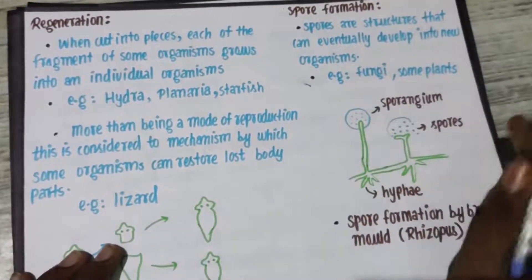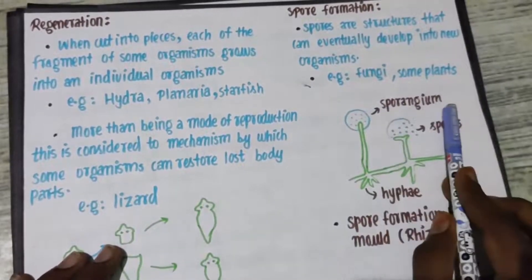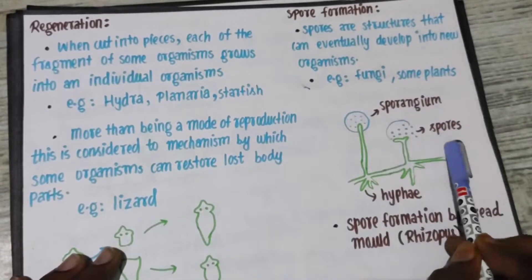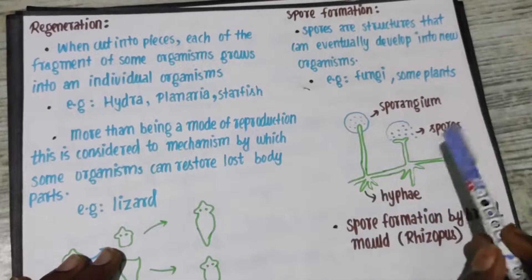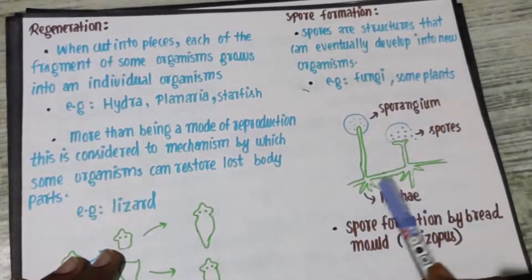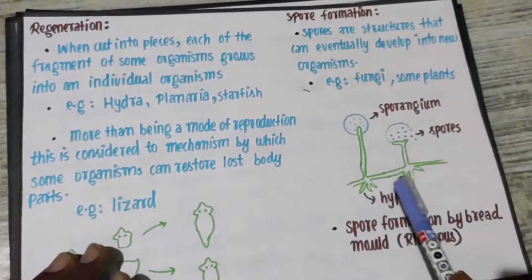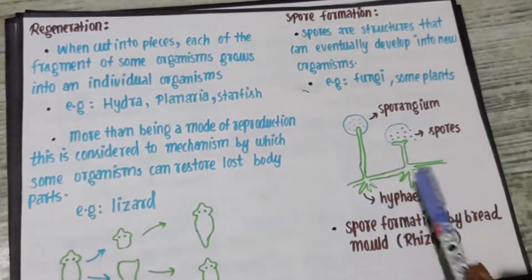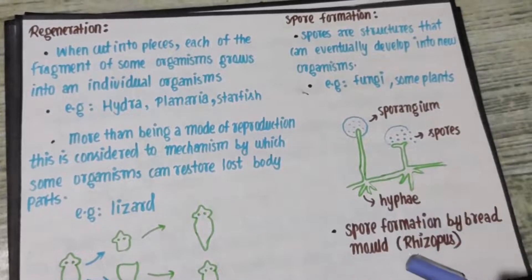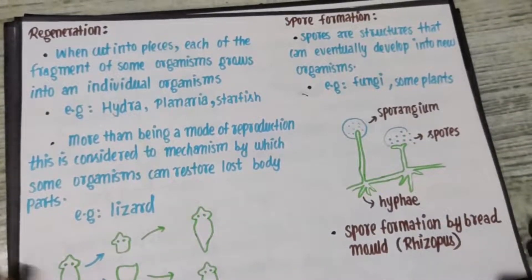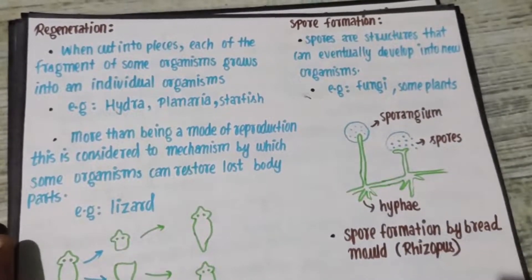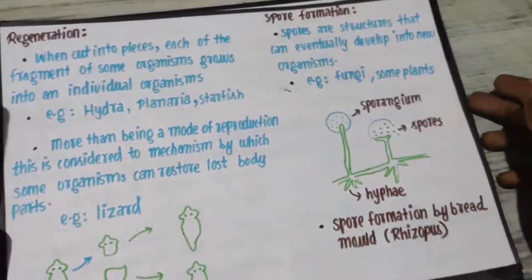The spores are contained in the sporangium. The hyphae is the thread-like structure that is there in this fungi. For example, you have to remember Rhizopus, also known as bread mold. Hope you can understand spore formation.